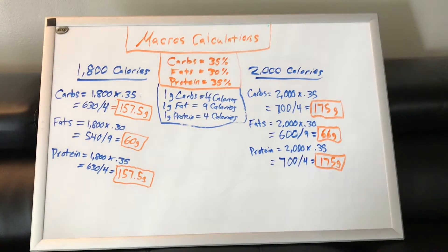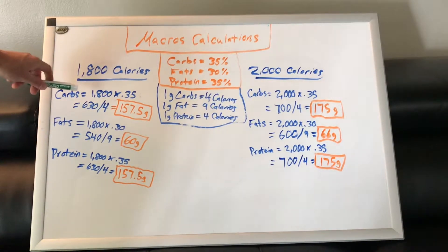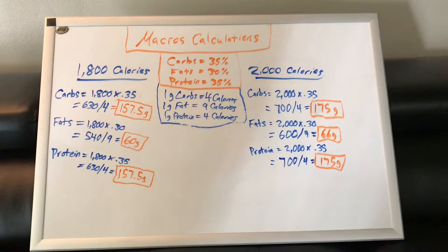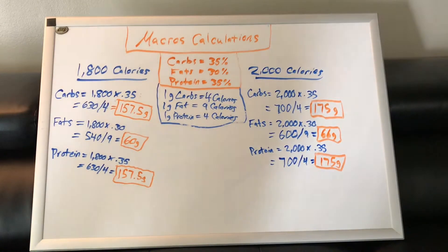Over here on the left-hand side, we have 1,800 calories. So this is how we're going to calculate out our carbs. Since we're 1,800 calories for our carbs, you're going to do 1,800 times 0.35, which is 35%, and that's going to equal 630. And since 1 gram of carbs equals 4 calories, you're going to do 630 divided by 4, and that's going to equal 157.5 grams of carbs per day.